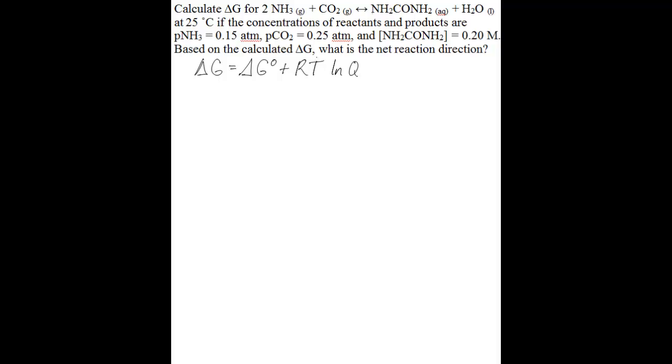Based on the calculated delta G, what is the net reaction direction? To calculate delta G, the relationship you use is: delta G under non-standard conditions equals delta G naught — the free energy change under standard state conditions — plus RT times ln Q, where R is the ideal gas constant, T is the temperature in Kelvins, and Q is the reaction quotient.